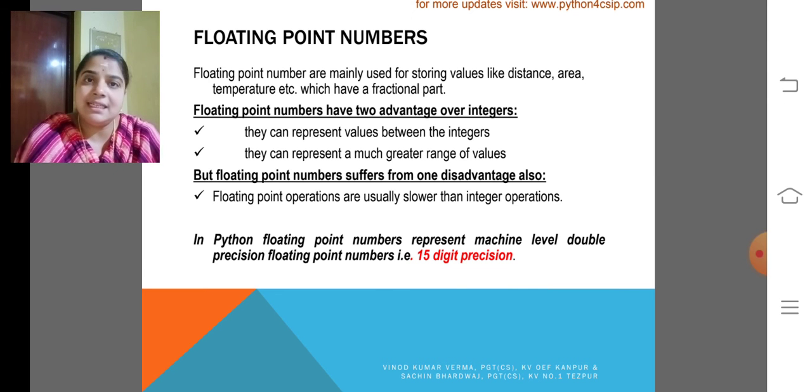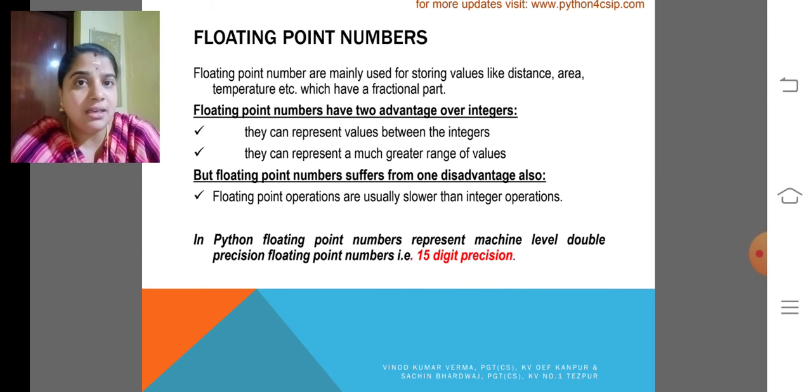They can represent values between integers, that is 1 and 2. Consider two integers, 1 and 2. How to represent intermediate value between 1 and 2? We have to use fractional numbers like 1.3, 1.5, 1.7, etc. They can represent values between the integers.